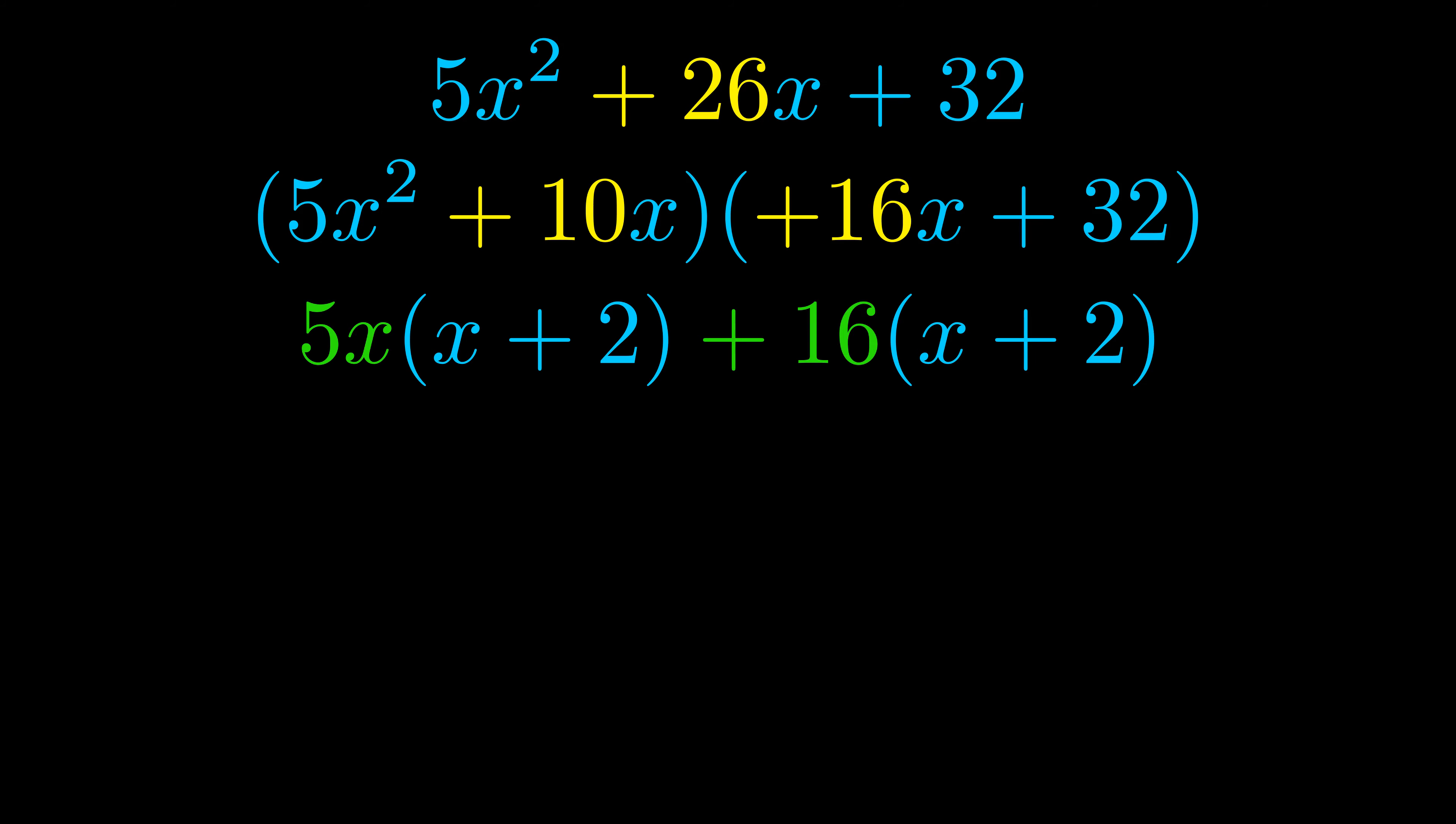Notice also how what remains inside of the parentheses is the same in both cases. The blue values are the same. Those blue values will become one of our factors and we will combine the two green values, the GCFs that we pulled out, to get the other one. And that is our fully factored equation.